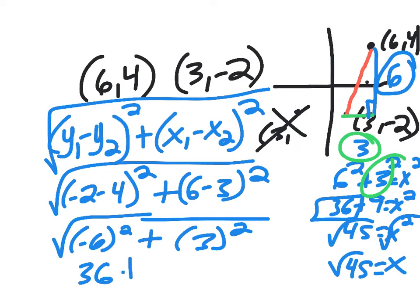And when we square it, we end up with 9, and then finally we'll add those together, so 36 plus 9 is 45, and I'm going to square root that.